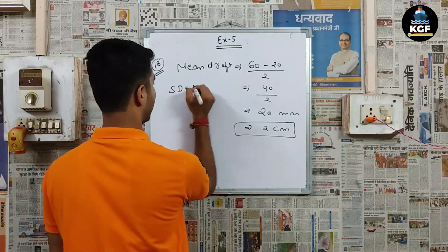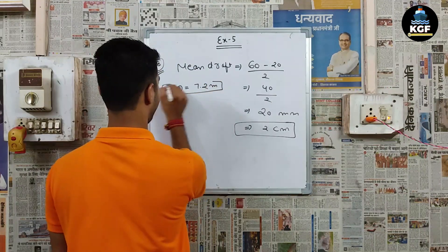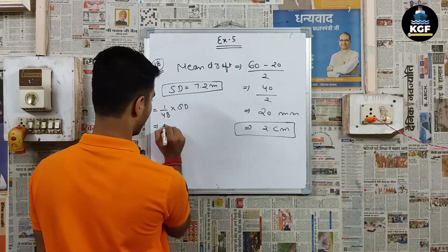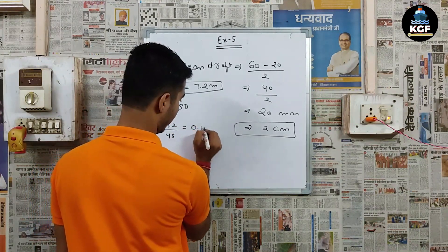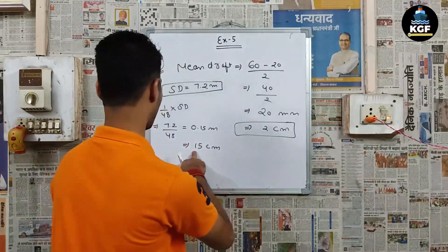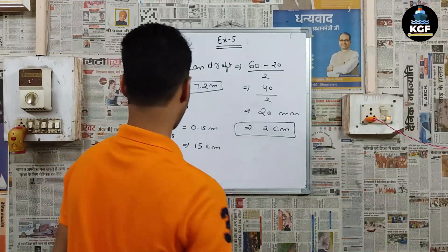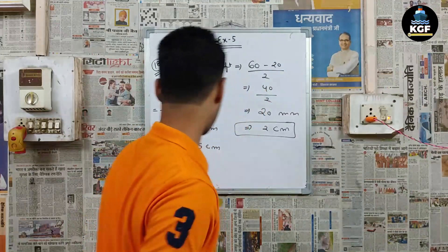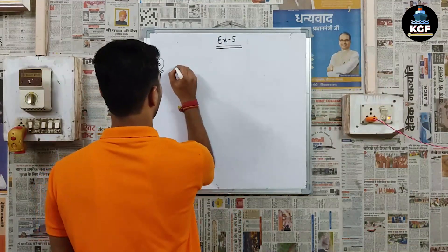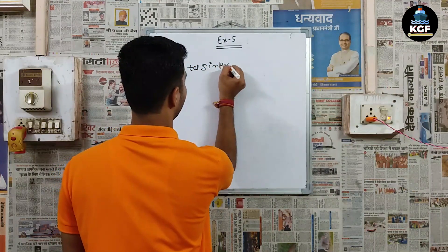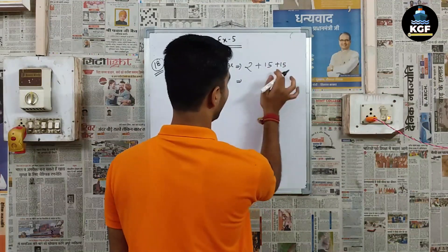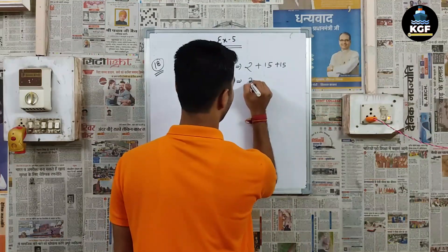Now we have the summer draft of 7.2 metres, and we know the formula for the distance from winter to summer load line: (1/48) × summer draft = 7.2 ÷ 48 = 0.15 metres = 15 centimetres. So we have the mean draft, the summer draft distance, and the distance from the winter line to the summer load line. Now we find the total sinkage: 2 centimetres + 15 centimetres + 15 centimetres = 32 centimetres.